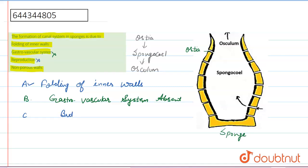Option fourth is non-porous wall, and we know that sponge has porous wall. But this one is non-porous wall, so it's completely wrong. So our right answer is option first.